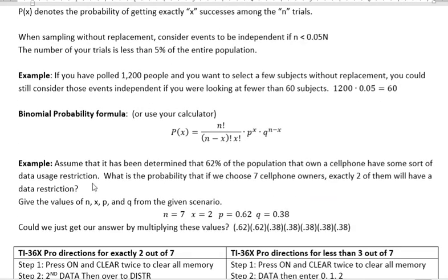Here's an example. Assume that it has been determined that 62% of the population that own a cell phone have some sort of data usage restriction. What is the possibility that if we choose seven cell phone owners, exactly two of them will have a data restriction?